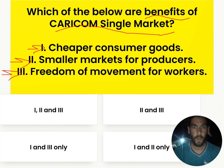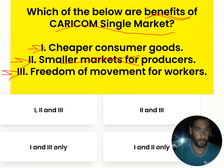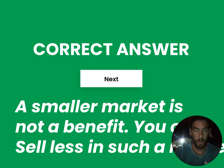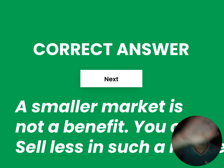The correct answer is cheaper consumer goods and freedom of movement for workers. A smaller market is not a benefit — in a smaller market you sell less. So the correct answer is one and three only. I hope you found this helpful and I'll see you in the next video.